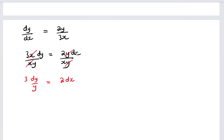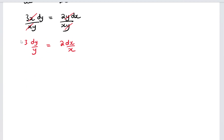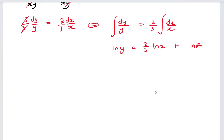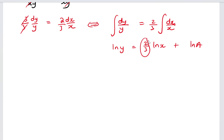We can also divide both sides by 3 so that dy/y equals (2/3) dx/x, and then integrate both sides. Integrating 1/y gives ln y, and since 2/3 is a constant, integrating 1/x gives ln x, so we have ln y equal to (2/3) ln x plus some constant. Since a constant is still a constant, we can write that constant as ln a.